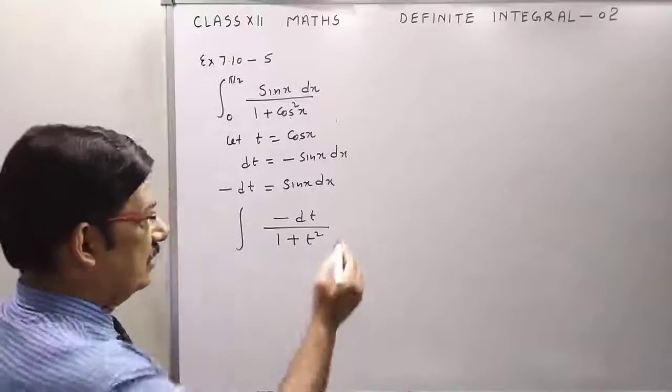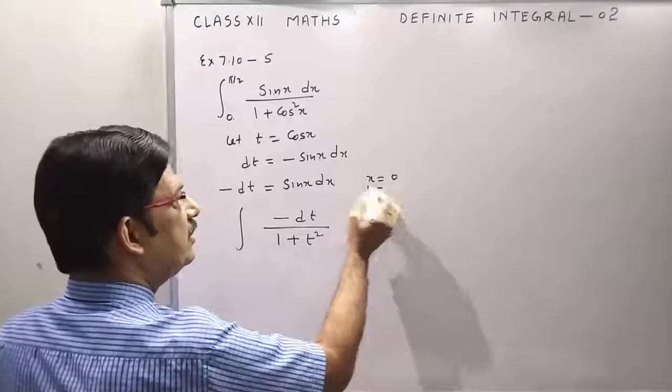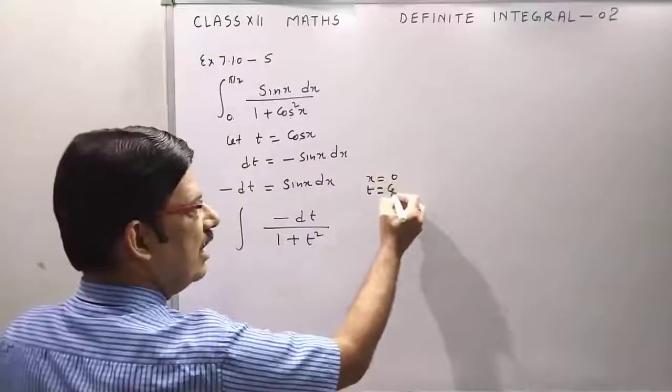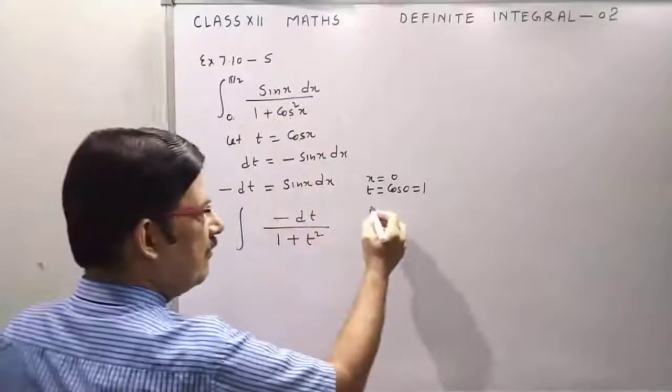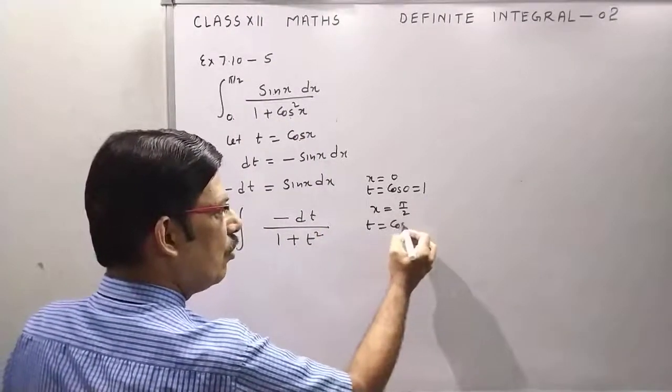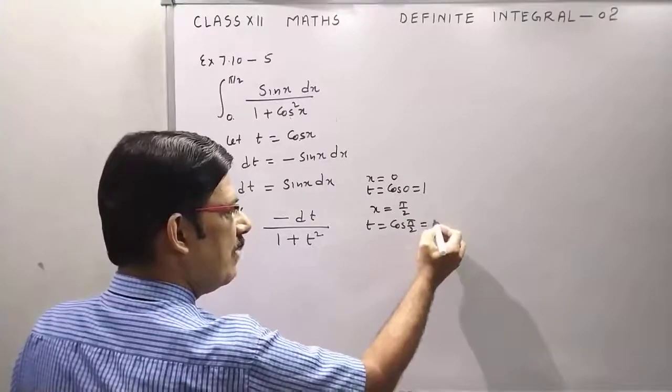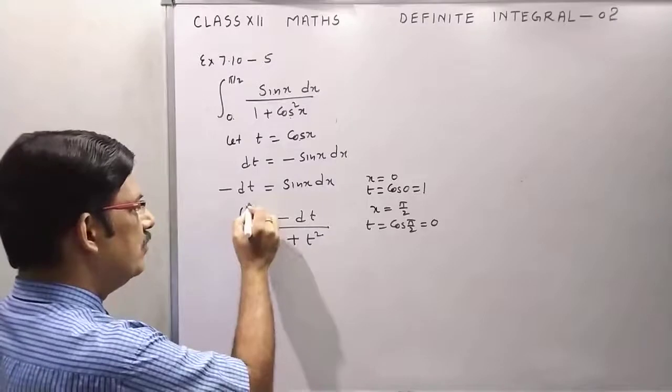Given x equals initially 0, we have t equals cos 0, and cos 0 is equal to 1. And for the upper limit, we have x equals pi by 2, then t will be cos pi by 2, and cos pi by 2 is equal to 0. So the limit will be 1 to 0.